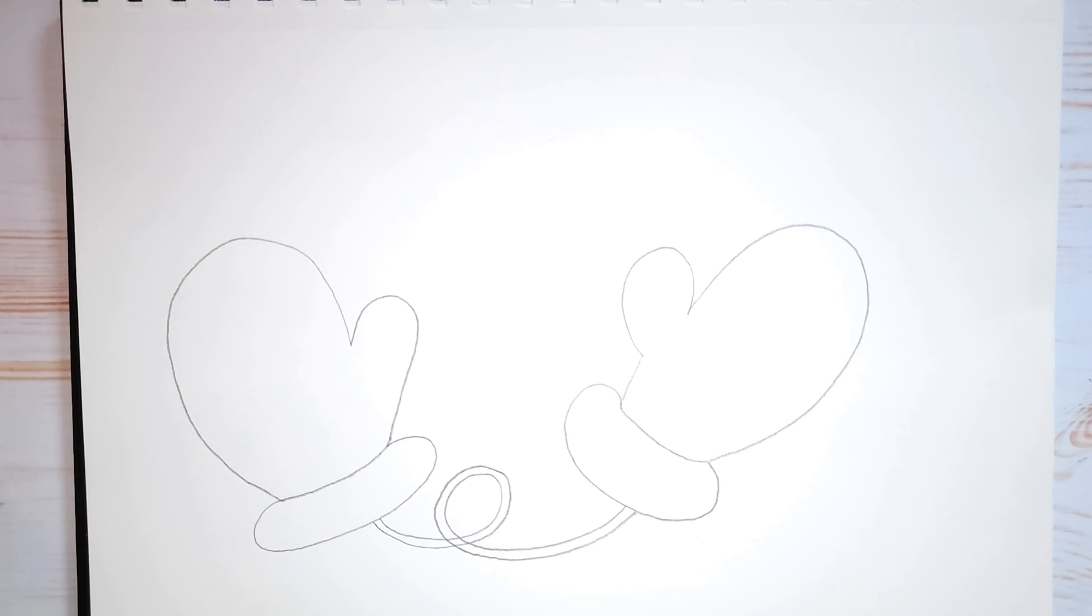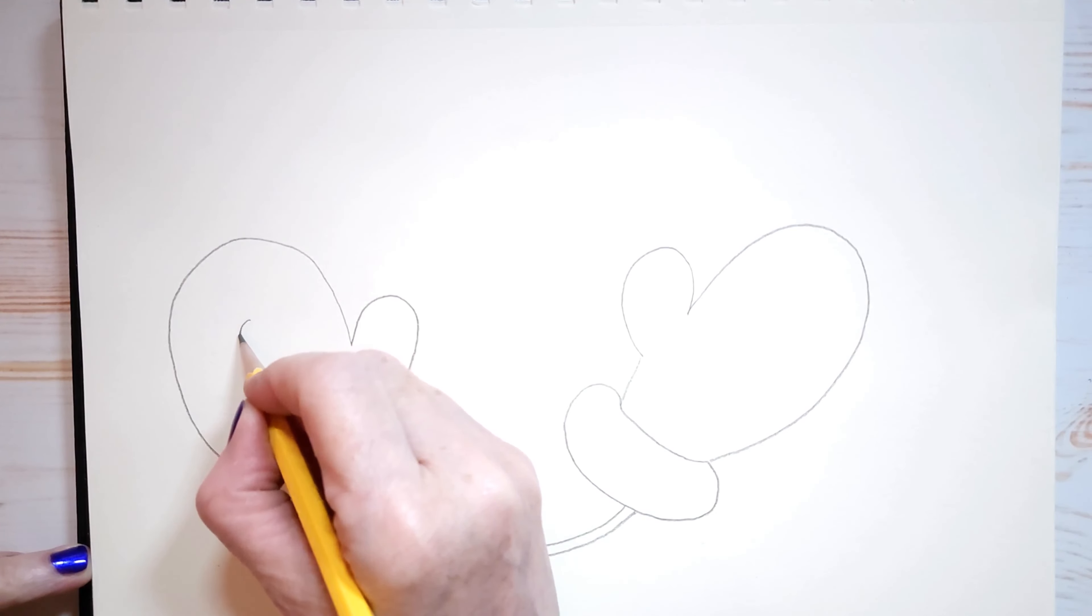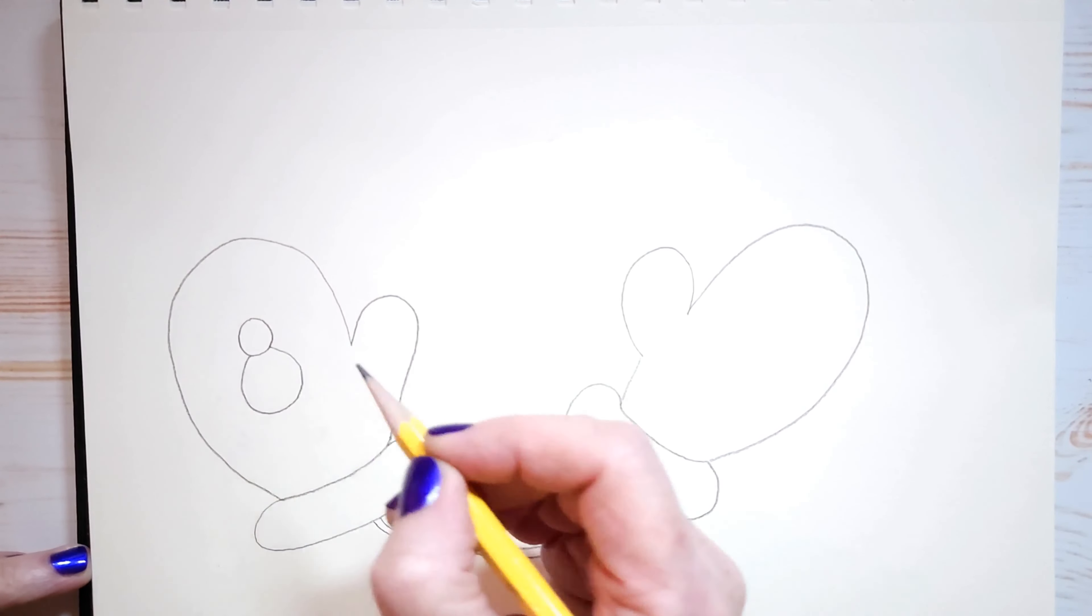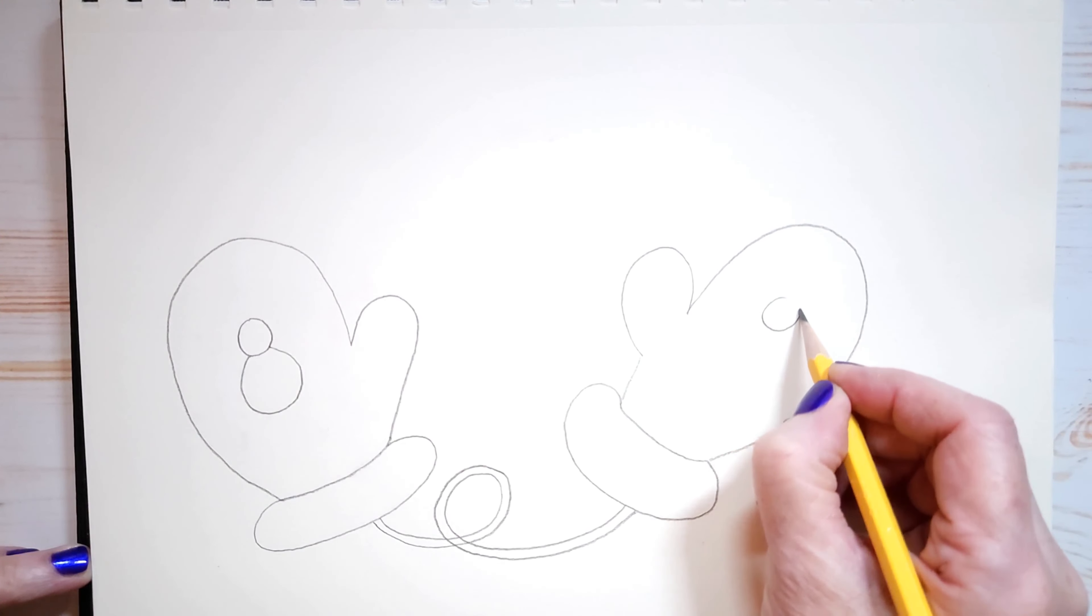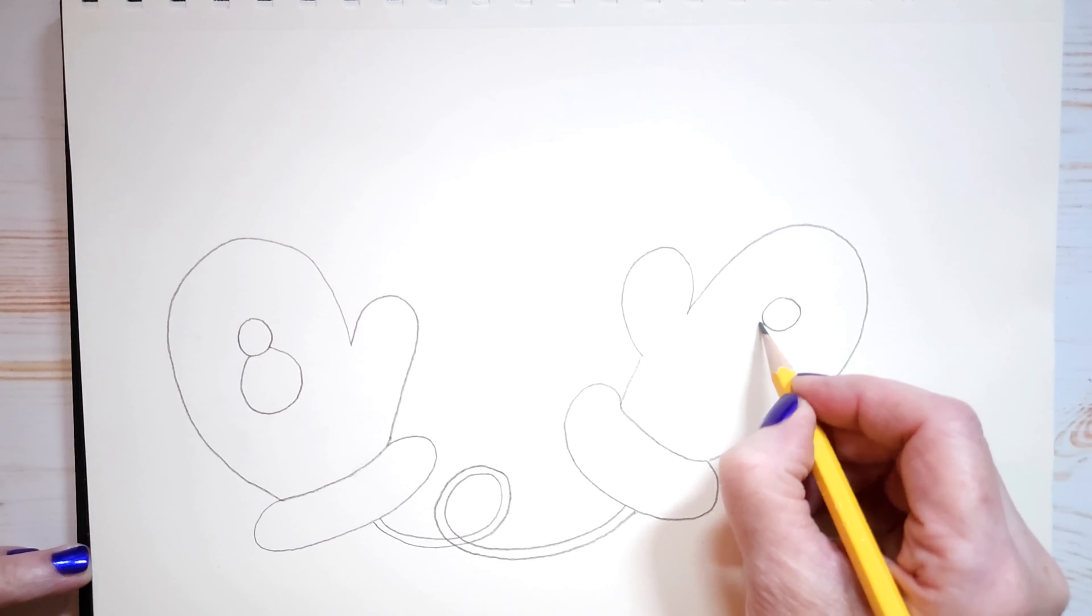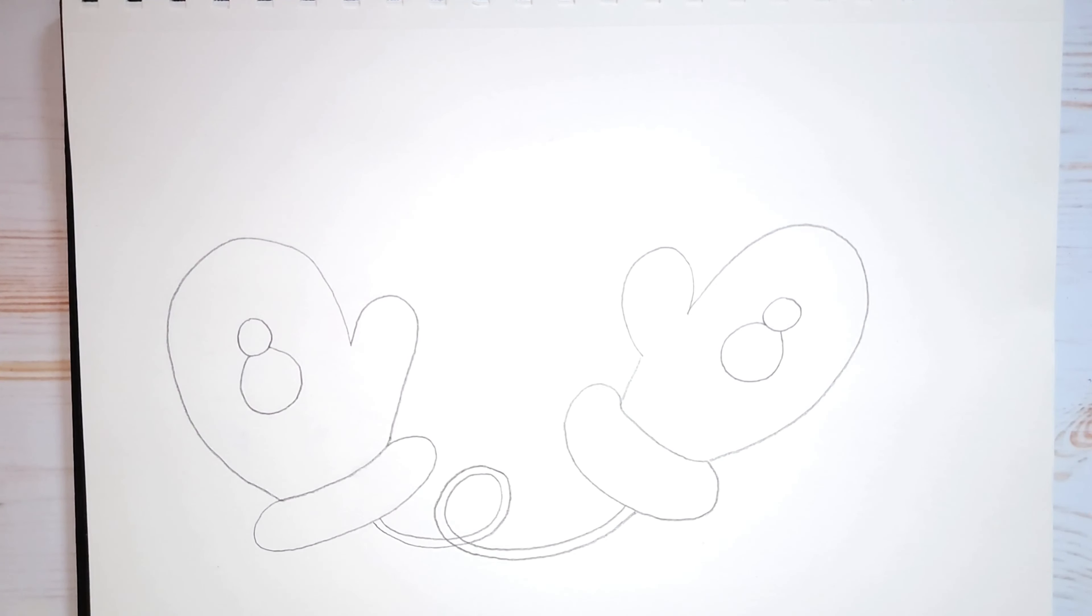Now what we'll do is we will outline with black. But before we do that I just thought I want to put something on the mittens. I'm not sure what. But I thought maybe I would do a little snowman. So I'll do a circle. And then another circle. And we'll leave it like that for now. I'll do that here too. A circle. And another circle.